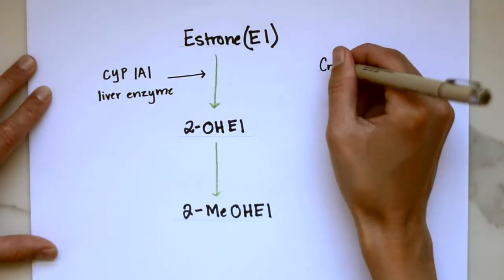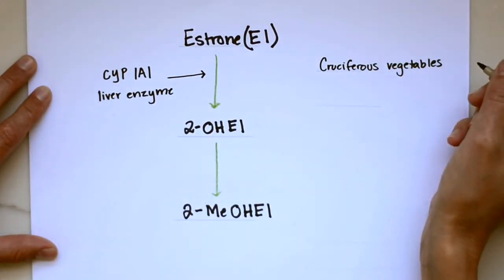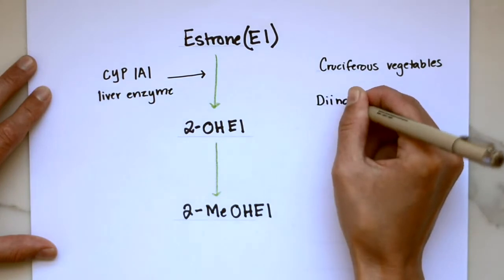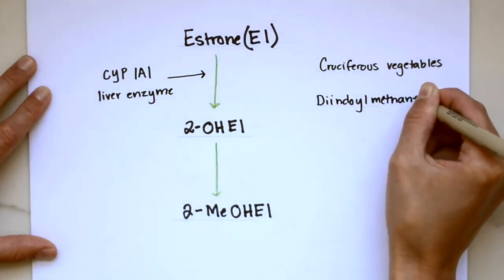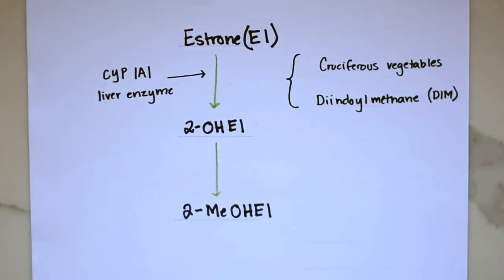Now the foods and supplements that we may recommend can include cruciferous vegetables such as broccoli or brussel sprouts, and the supplement diindolmethane, which is commonly referred to as DIM, has been shown to upregulate the CYP1A1 enzyme.